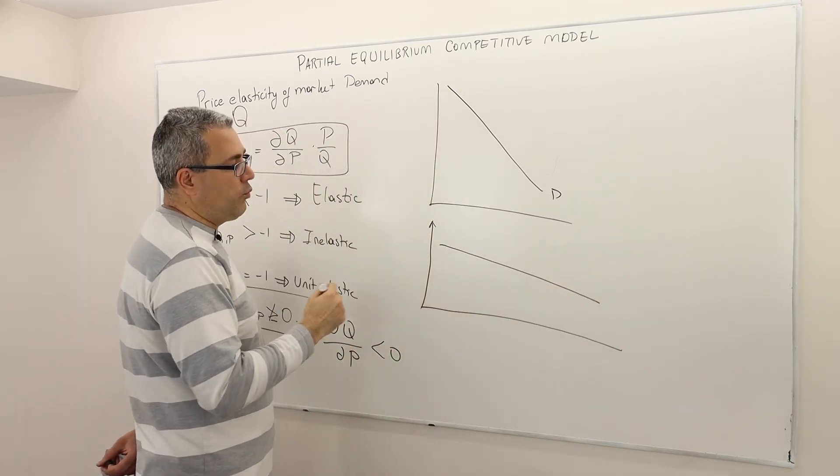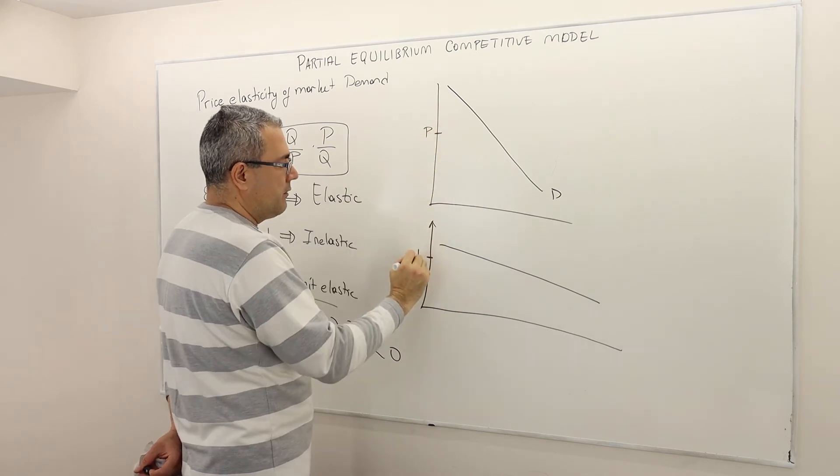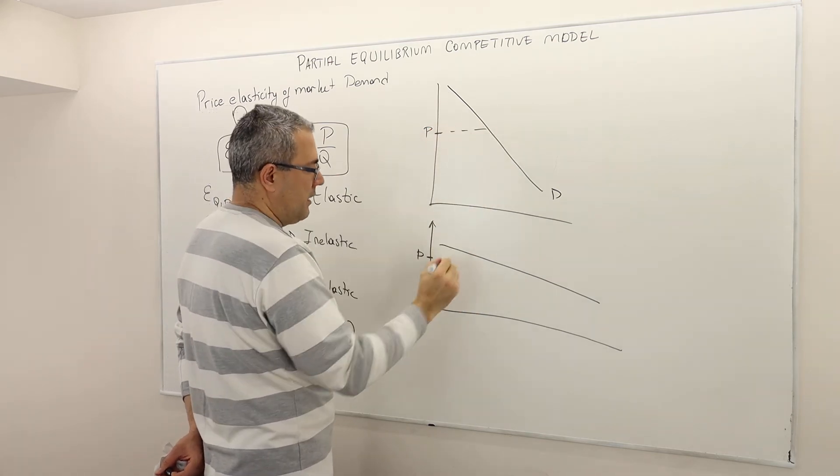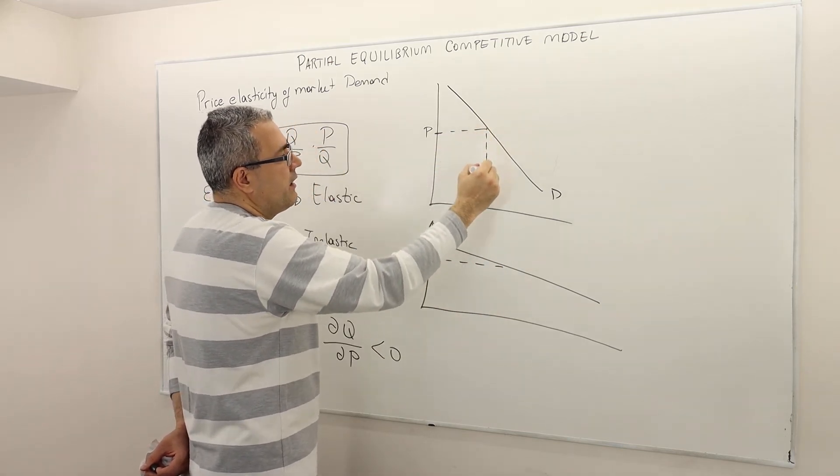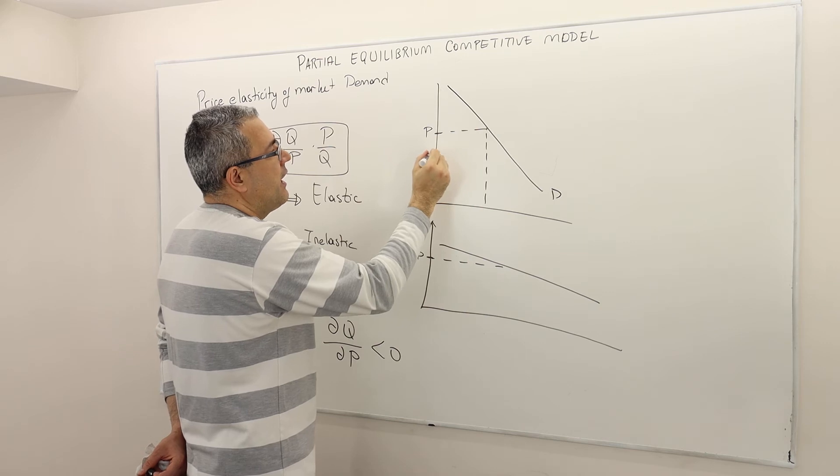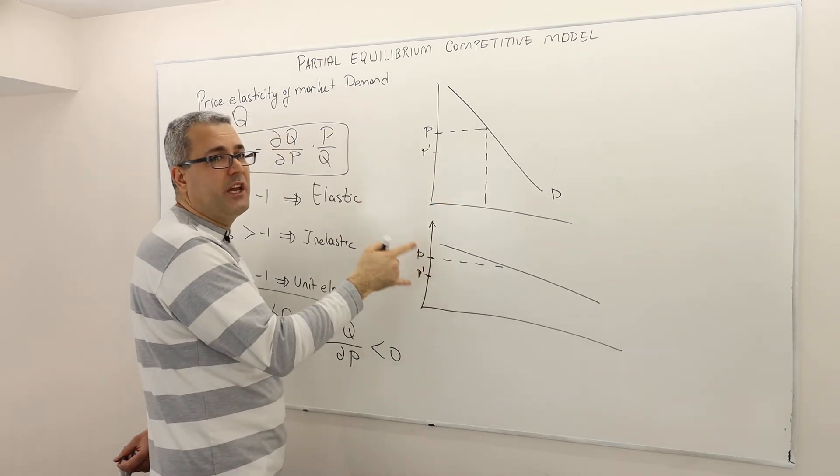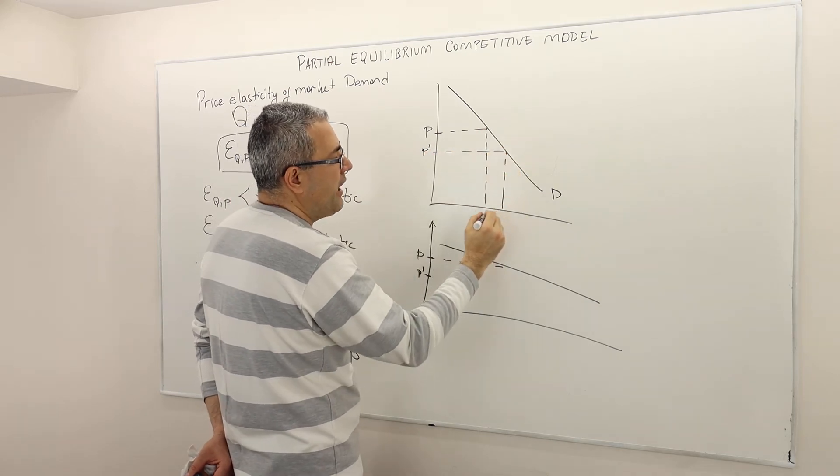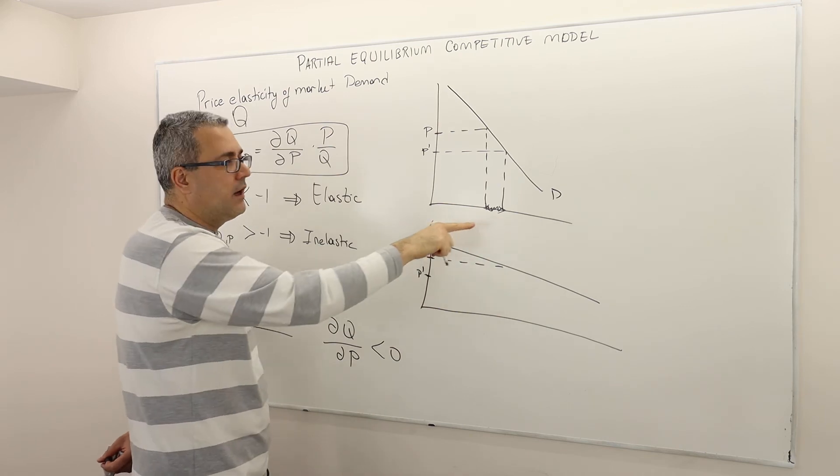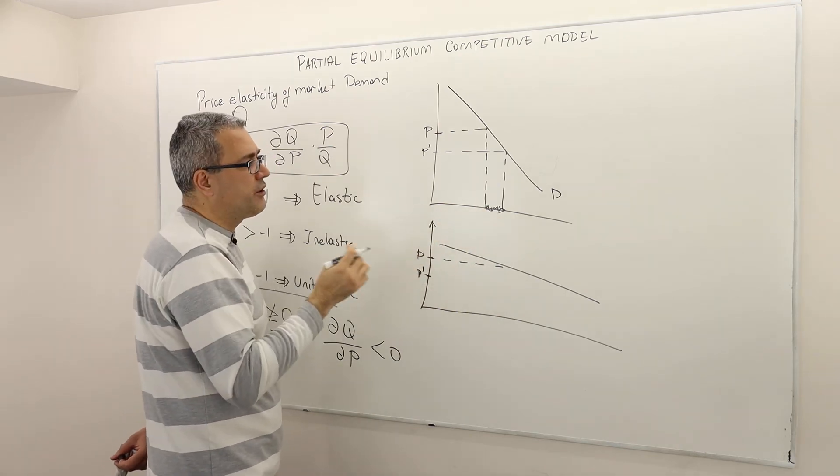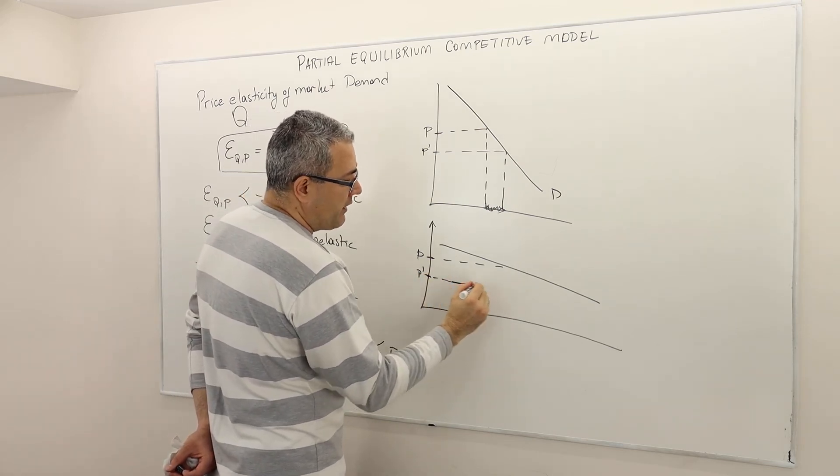So what we can observe here, if you pick the same price level P on both demand levels, what happens is that if you decrease the price 10% and make it P prime, the price change is the same. What happens is that the change in quantity is this much. So this area, this length measures how much quantity will change. So this is one demand.